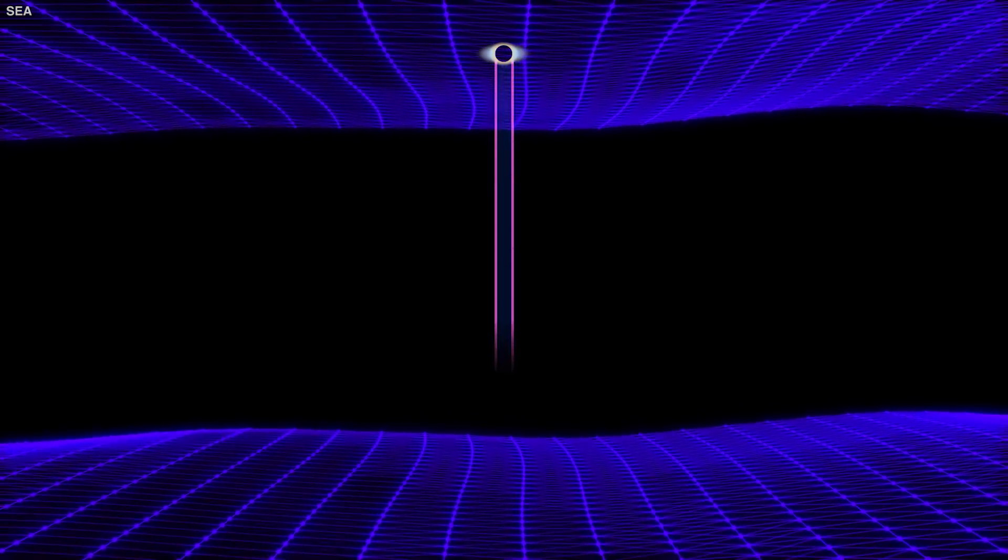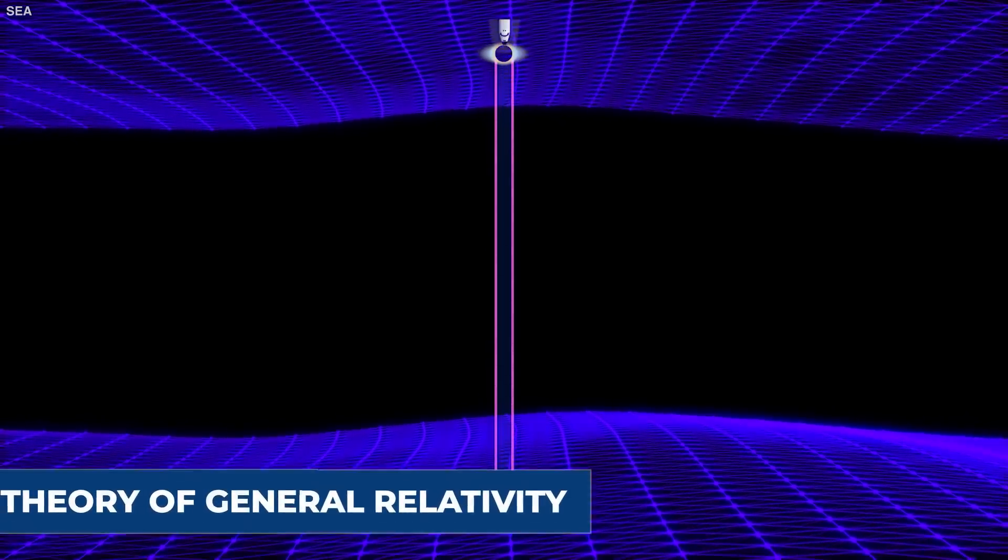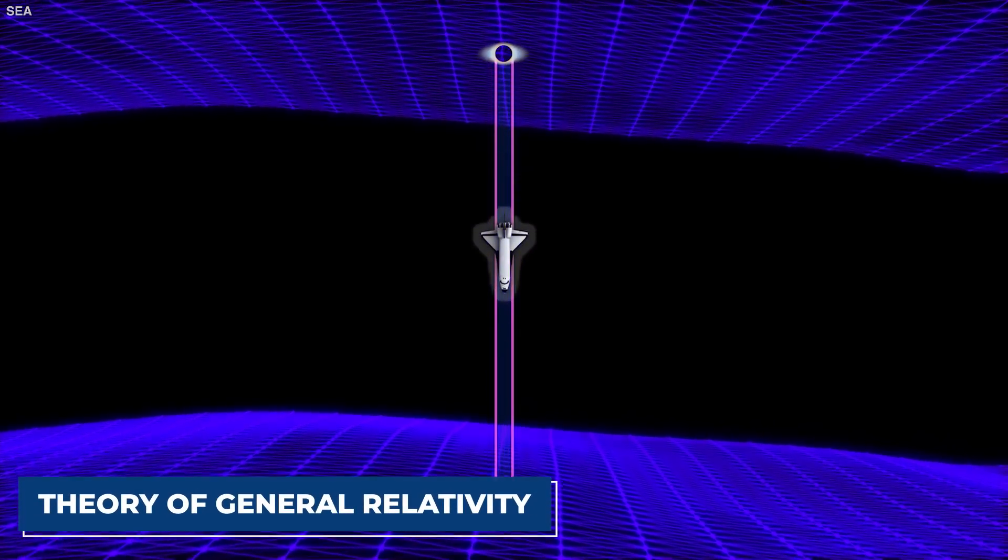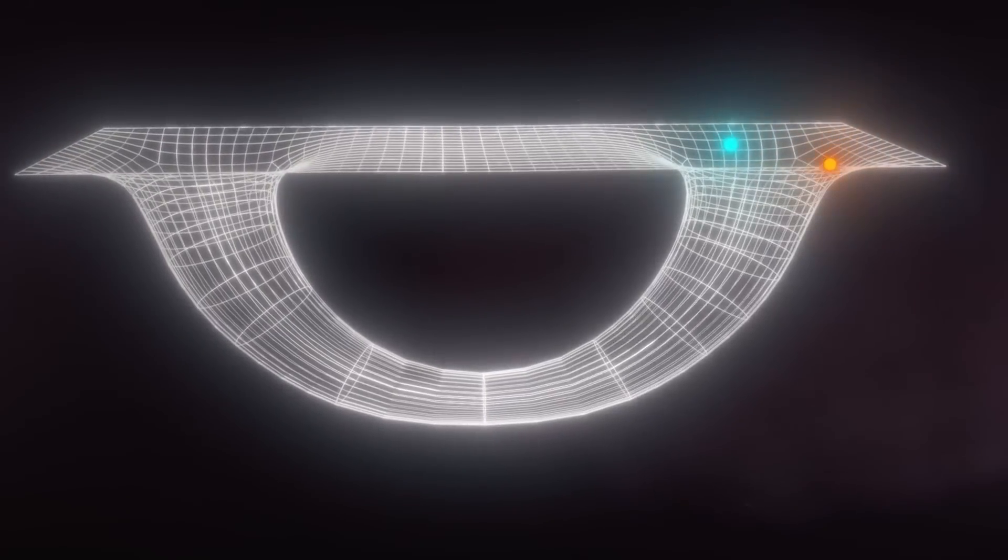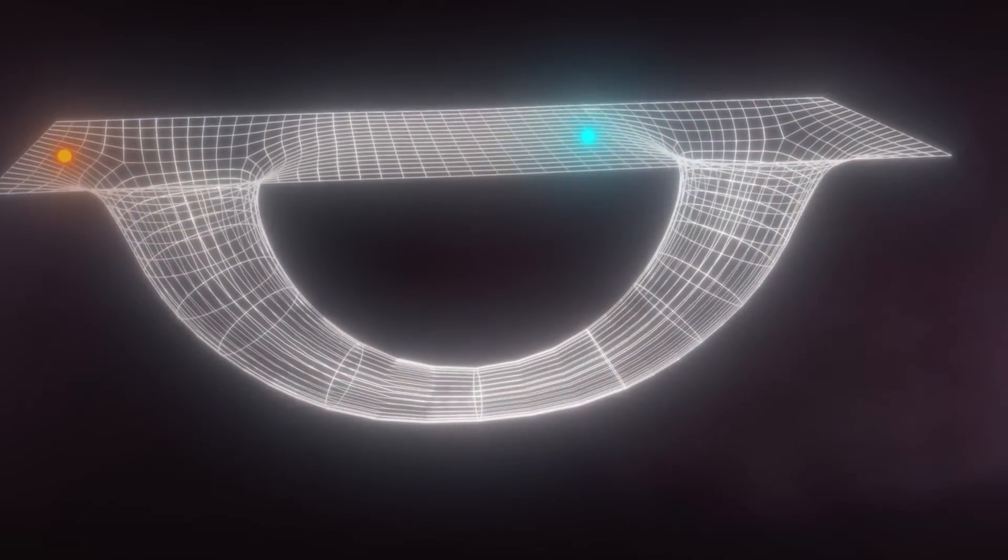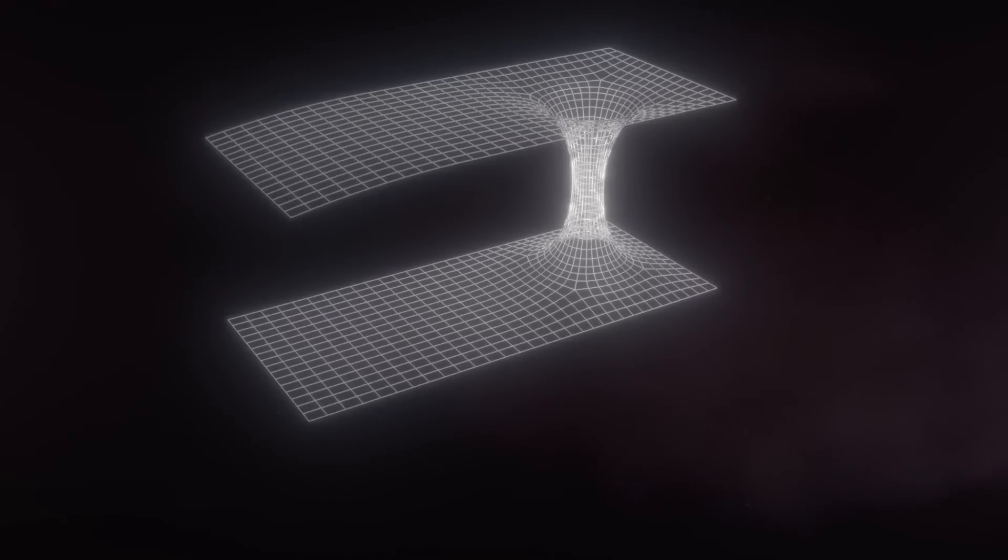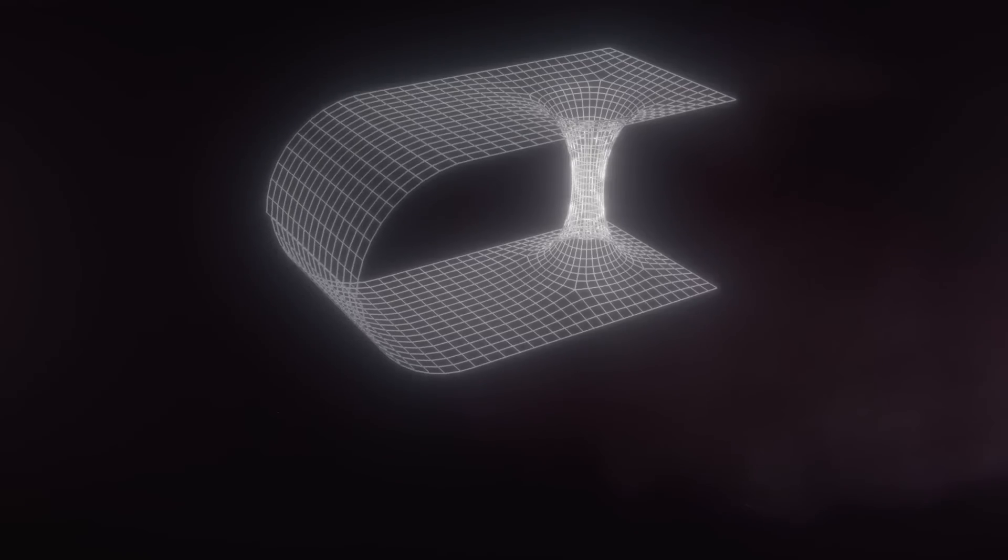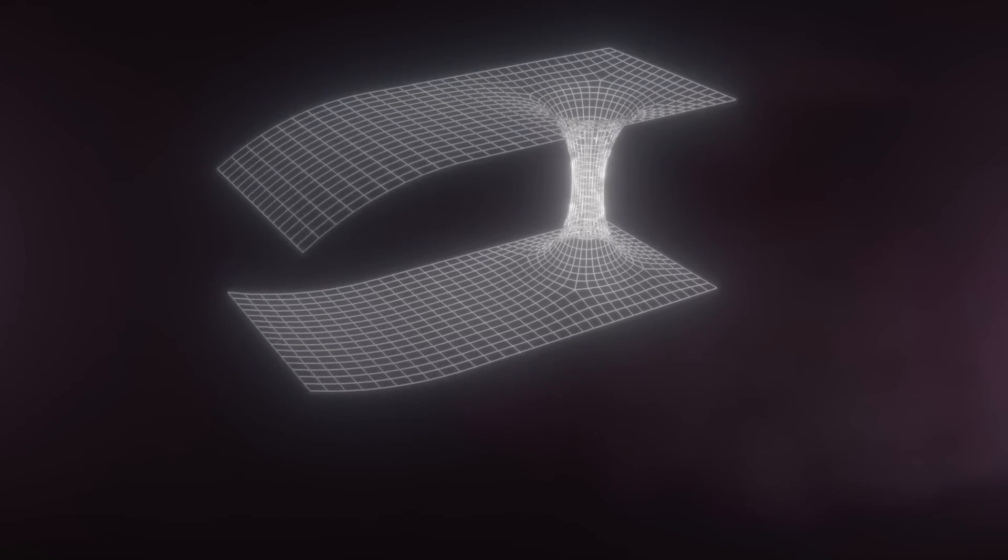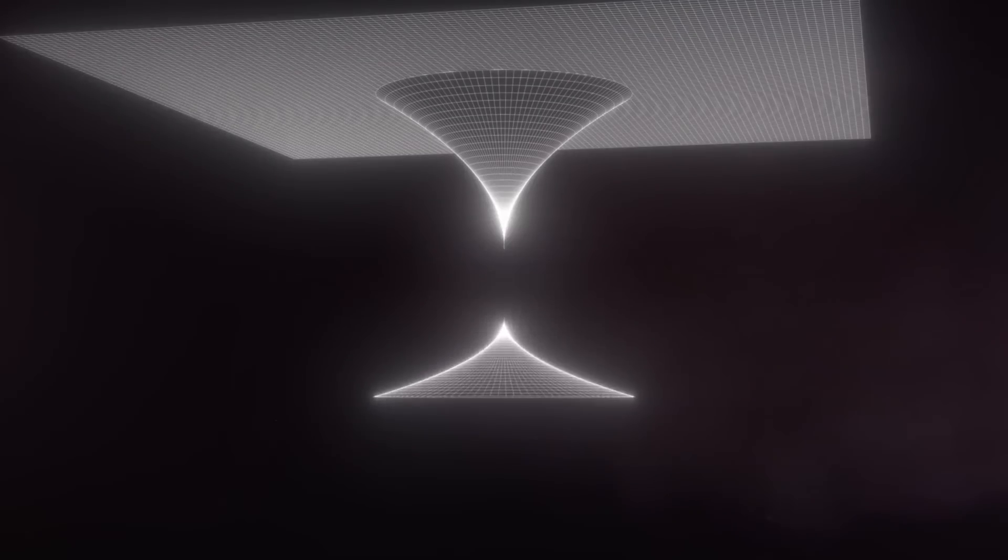A wormhole is actually a solution to the equations describing Einstein's theory of general relativity, which connects two distant points in space or time via a tunnel. However, in this case, the tunnel's length is shorter than the distance between those two points, which means you can refer to wormholes as a shortcut between two points.